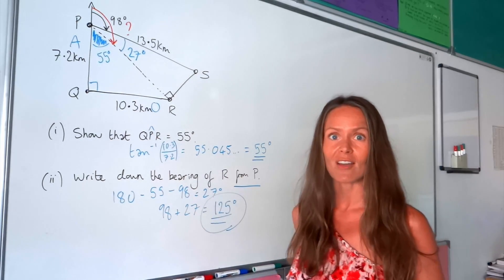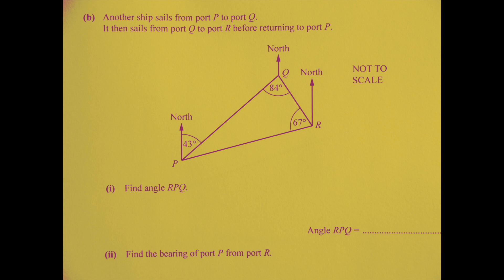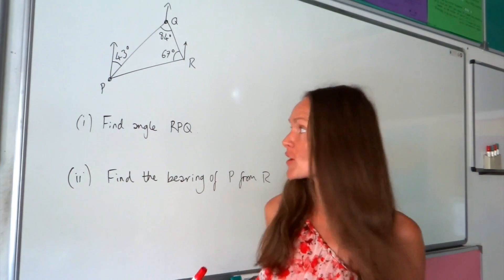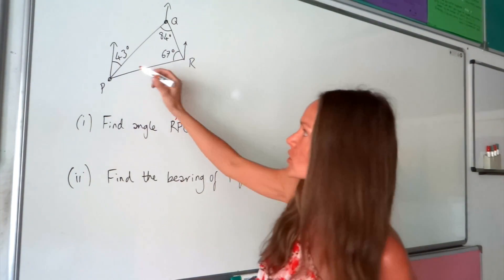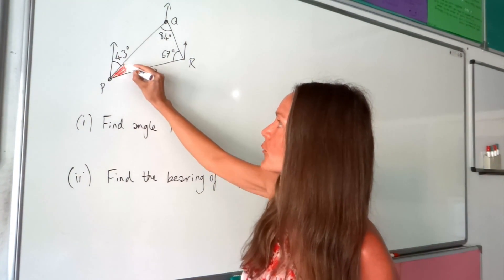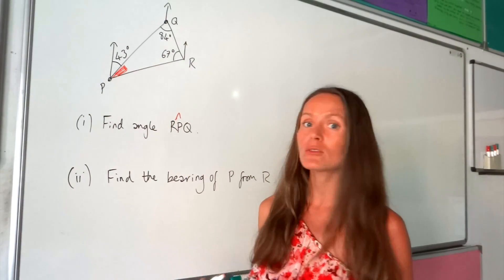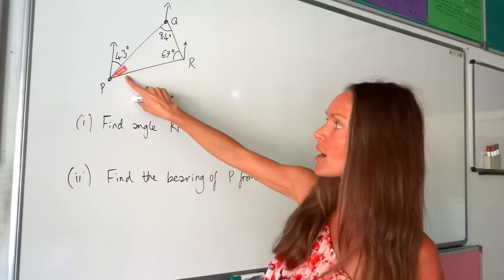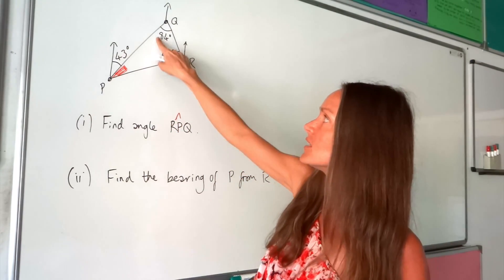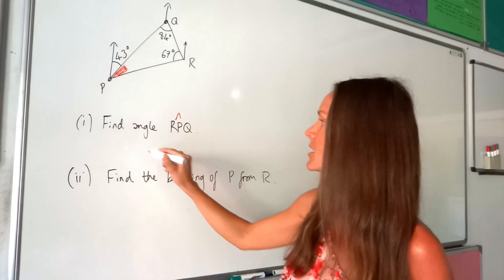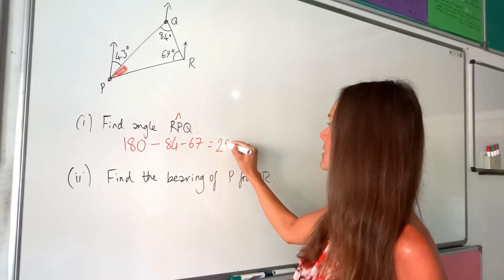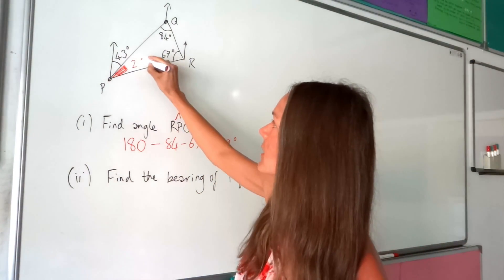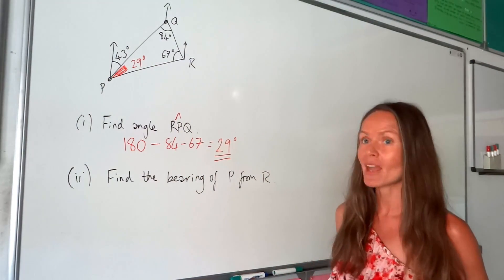In the first part of this question we have to work out angle RPQ, which is angle P inside the triangle. All triangles have angles that add up to 180 degrees, so I work out angle P by subtracting the two known angles from 180: 180 minus 84 minus 67 gives me 29 degrees. That's the answer to the first part.